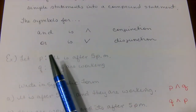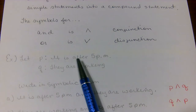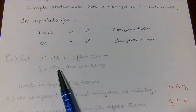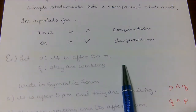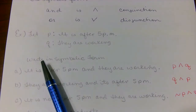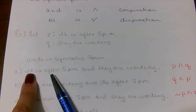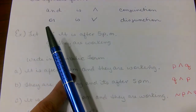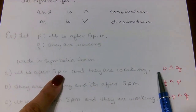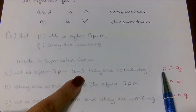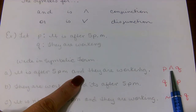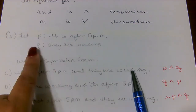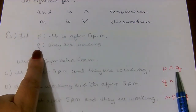Let's look at these two statements. Statement P says it is after 5 p.m. — a true or false statement. Q says they are working — another true or false statement. So let's write it in symbolic form. It is after 5 p.m. is the letter P, so P goes first, then the 'and' symbol, and then Q for 'they are working.' So we have P ∧ Q.